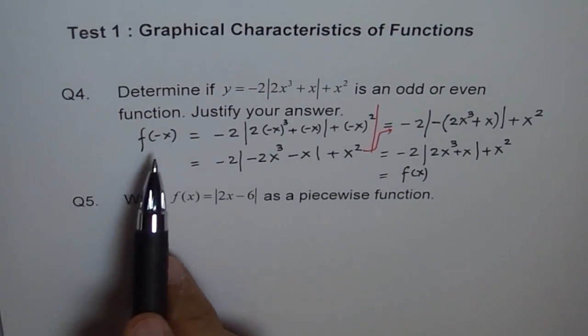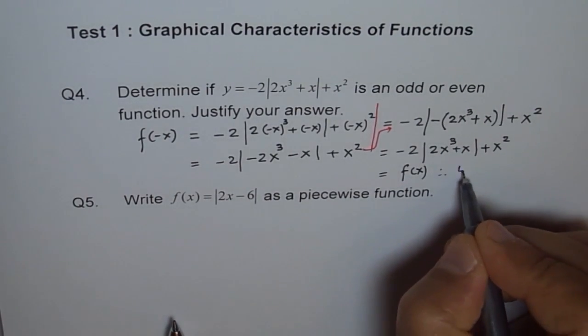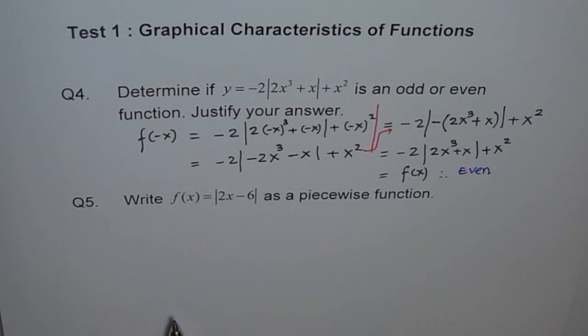Since f(-x) is equal to f(x), the function is even, right? Therefore, the function is even. So we have an even function here, correct? So that's our solution.